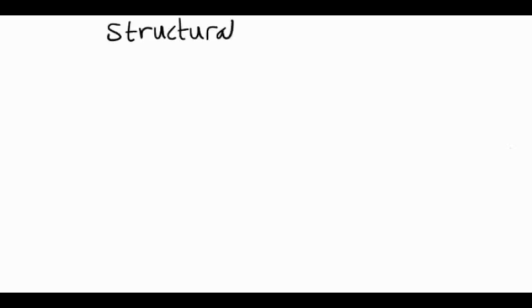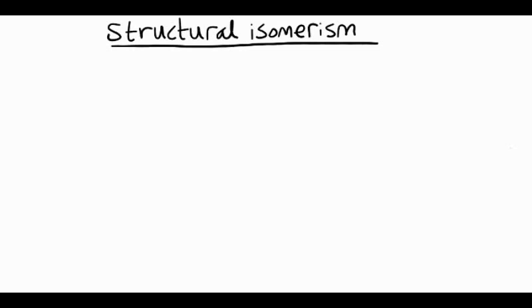We're going to have a look at structural isomerism. There are three types of structural isomerism. The first is called chain isomerism, where we alter the hydrocarbon chain.